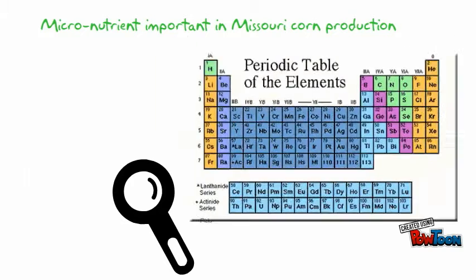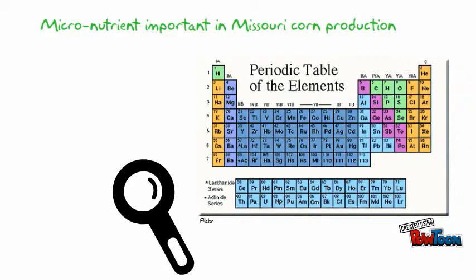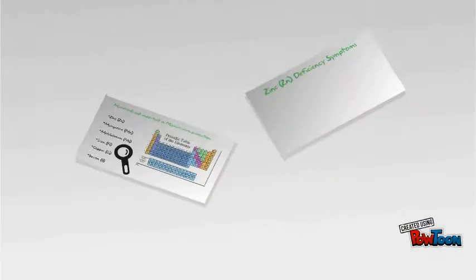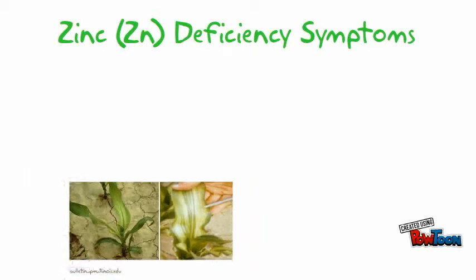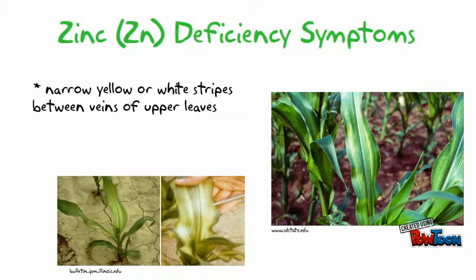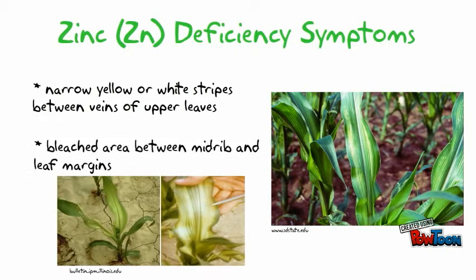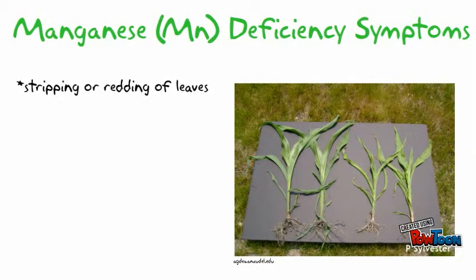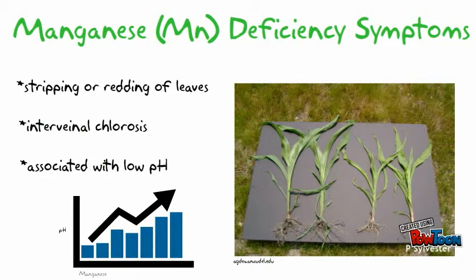Important micronutrients that commonly cause deficiency symptoms in corn include zinc, manganese, molybdenum, iron, copper, and boron. Zinc and manganese are two of the most commonly deficient micronutrients in Missouri corn production. Zinc deficiency symptoms include narrow yellow or white stripes between veins of upper leaves, and a bleached area between the midrib and leaf margins. Manganese deficiency symptoms include striping or streaking of corn leaves, interveinal chlorosis, and is often associated with low pH.